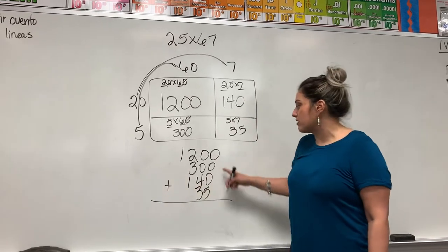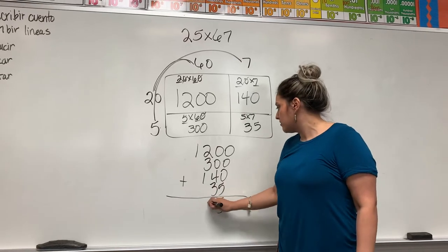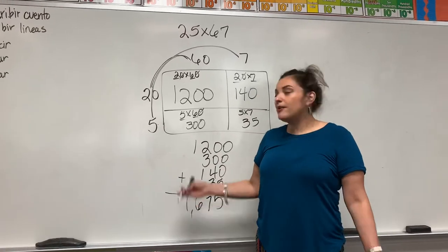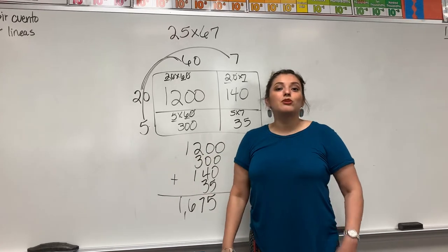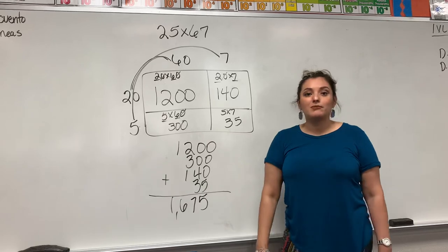And I add up the partial products. These are all part of the products, so I'm going to add up the partial products. 5, 6. Ta-da! This is how you do multiplication with two-digit numbers by two-digit numbers using area models.